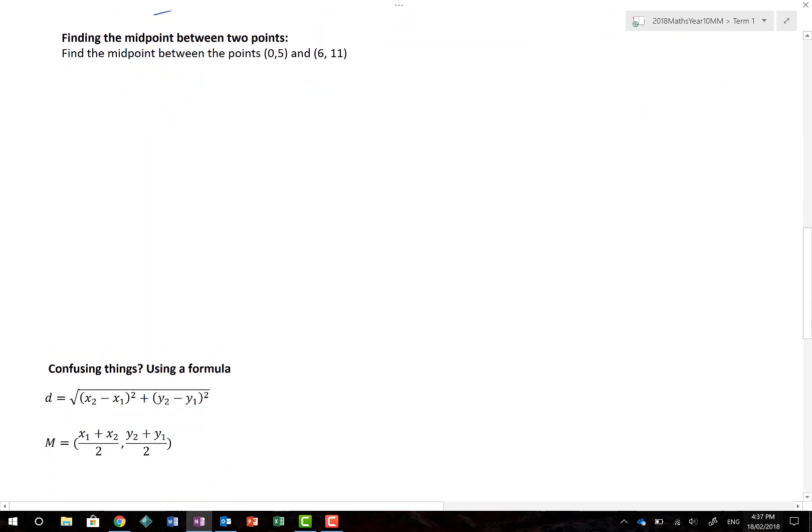Now, then we get to this midpoint business. And I said to you earlier, there was a trick to doing this. Firstly, let's look at the diagram. Here is my diagram. Here is a right angle triangle. Here is 0, 5 and here is 6, 11. Now, if we call this point A, for example, and we call this point B, then there is A and there is B.